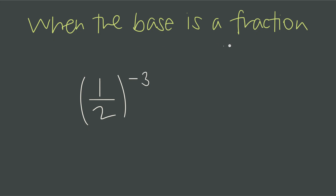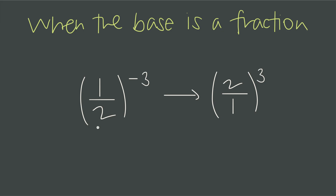The first problem: what do we do when the base is a fraction? We have negative exponents here, but how do we handle a fractional base? The rule is that the fractional base flips upside down and the exponent changes from negative to positive. So we flip the fraction from 1 over 2 to 2 over 1 — we took the reciprocal — and changed the exponent from negative to positive.